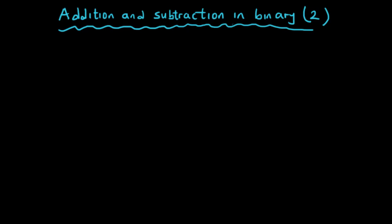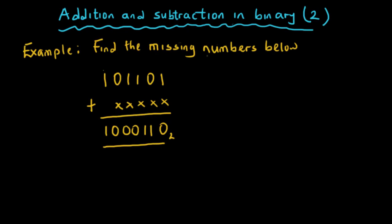In a previous video I showed you how to add and subtract numbers in binary. In this video I want to take it a step higher. The best way to do this is to take examples. So we have this question: find the missing numbers. We have 101101 plus an unknown number, and we are given 100110. Before I solve this, I need to show you an illustration.